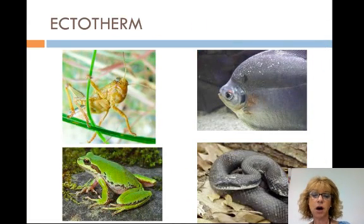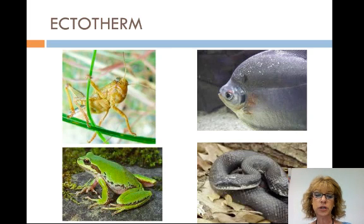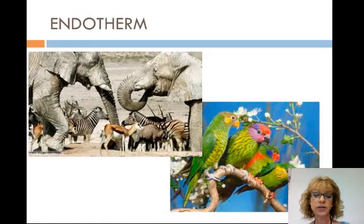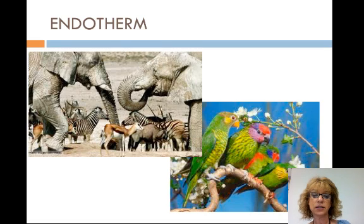Ectotherms have very low metabolic rates; the amount of heat generated is too low to affect body temperature. Body temperature is determined by the temperature of the surrounding environment in ectotherms. Invertebrates, fish, amphibians, and reptiles are all examples of ectotherms. Endotherms have a high metabolic rate, which generates enough heat to keep the body warmer than the environment — for example, mammals, birds, a few reptiles, and some insects do some endothermic processes.